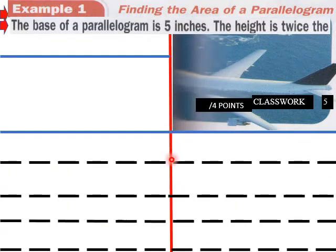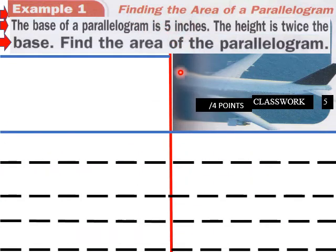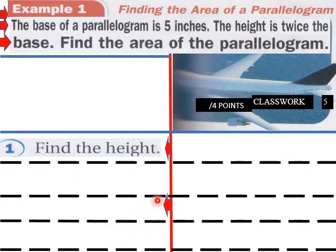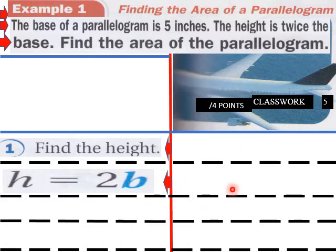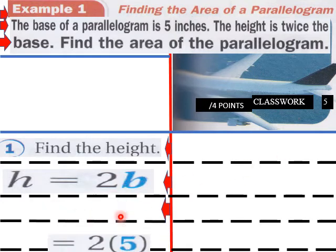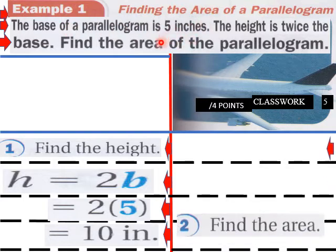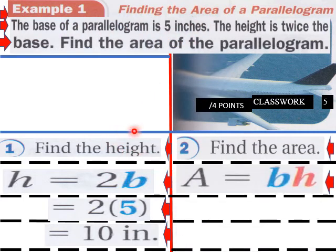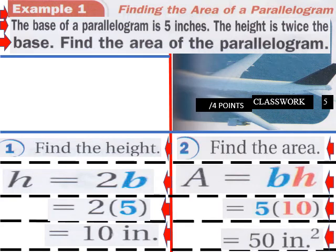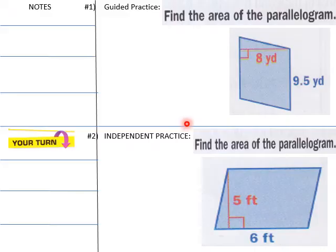The height is 2 times b, twice the base, right? So 2 times 5 here would be our height. So our height is 10 inches. So now what do we do? Find the area. So area equals base times height. We know our b, we know our h. So what do we do? 5 times 10. So our area is 50 square inches for this parallelogram up here.